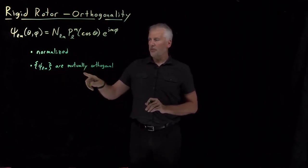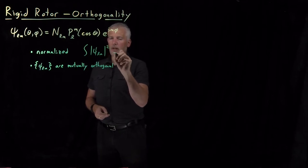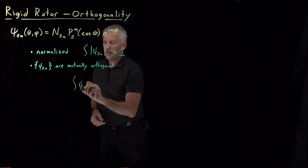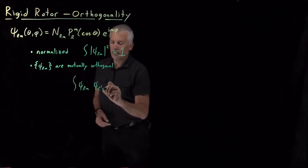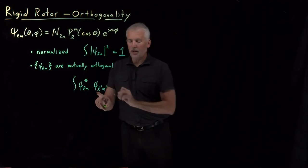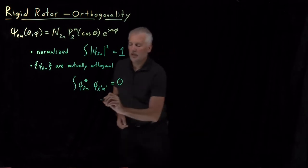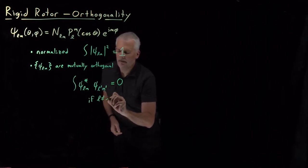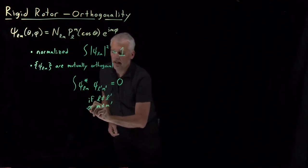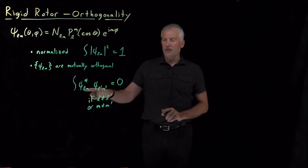Just as a reminder of what these words mean: a function is normalized if the integral of the wave function squared is equal to 1. Orthogonal means the integral of one wave function times a different wave function — so ψ_{L,M} multiplied by ψ_{L',M'} — is going to come out equal to 0 if either L is not equal to L prime, or M is not equal to M prime.